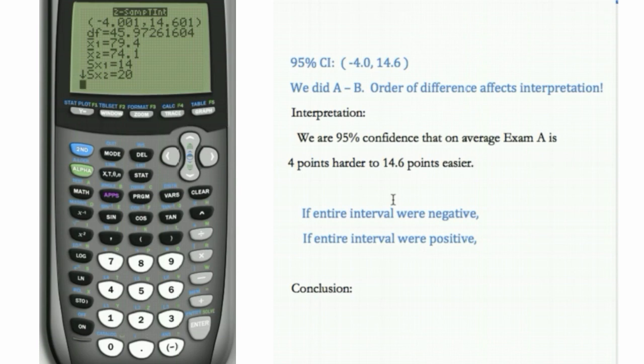Now, if this entire interval were negative, then we would have evidence that what? Well, if the entire interval were negative, we're saying B is bigger than A. So we're saying that A is a smaller number. We're saying A is harder.